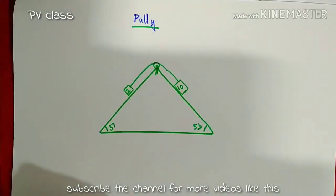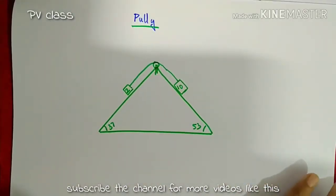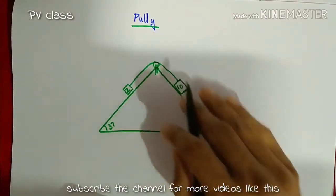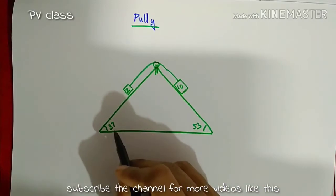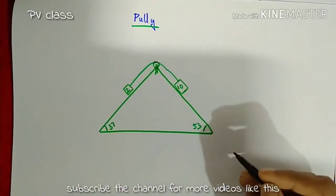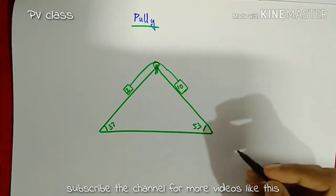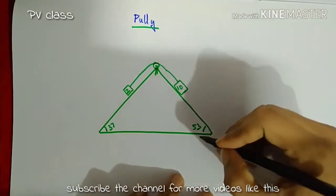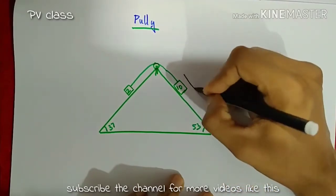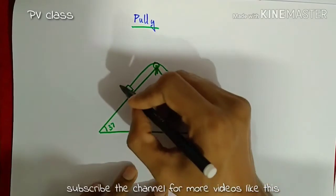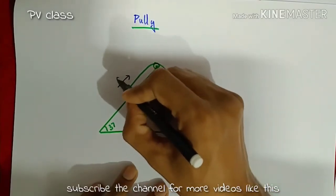We are on the pulley problem. A 2 kilogram mass and a 10 kilogram mass are attached over an inclined surface making an angle of 37 and 53 degrees as shown in the figure. We have to find out the acceleration and tension. Since the 10 kilogram mass is on the larger slope, we assume it will move down with acceleration a, and as a result the 2 kilogram mass will move up with acceleration a.